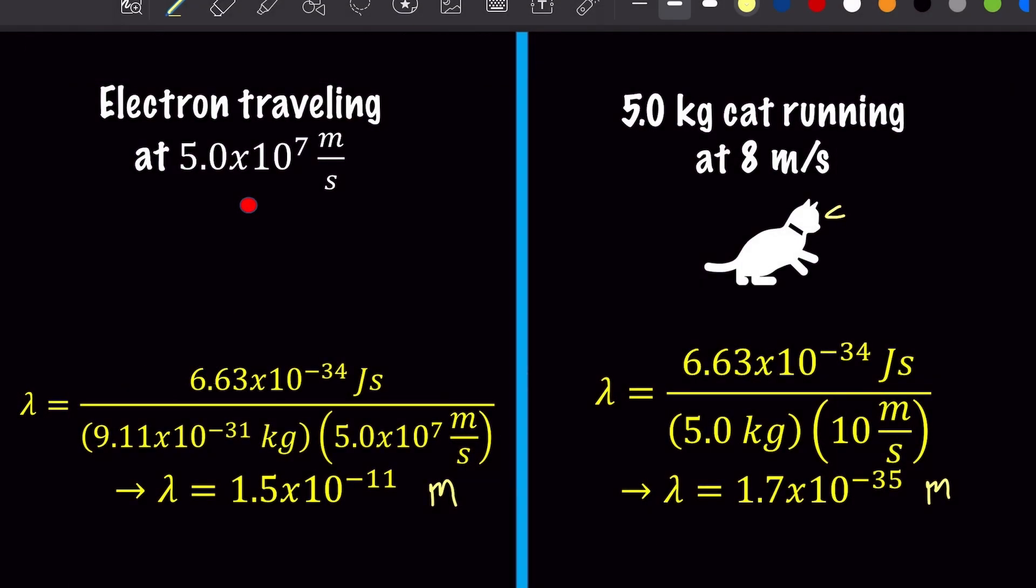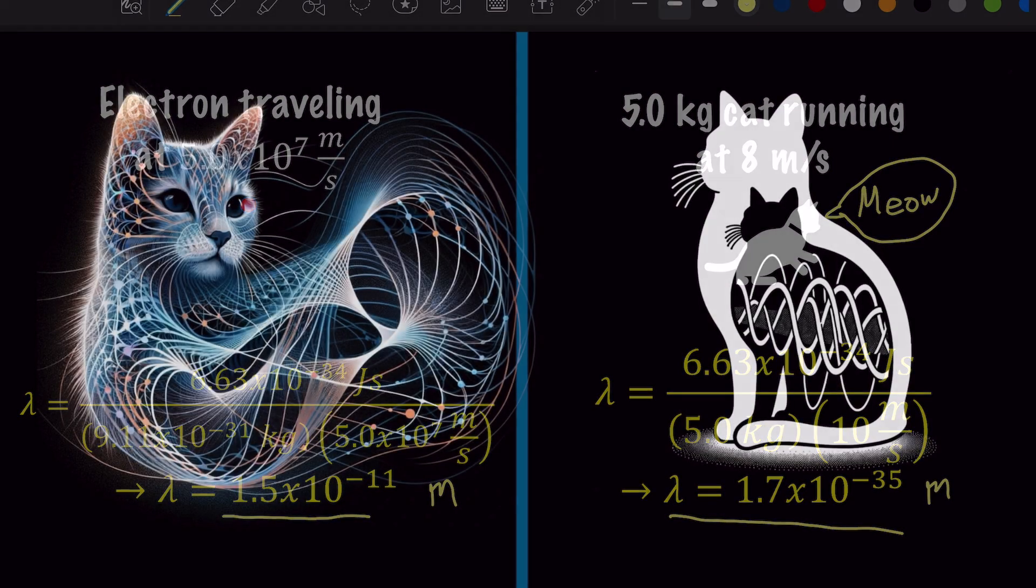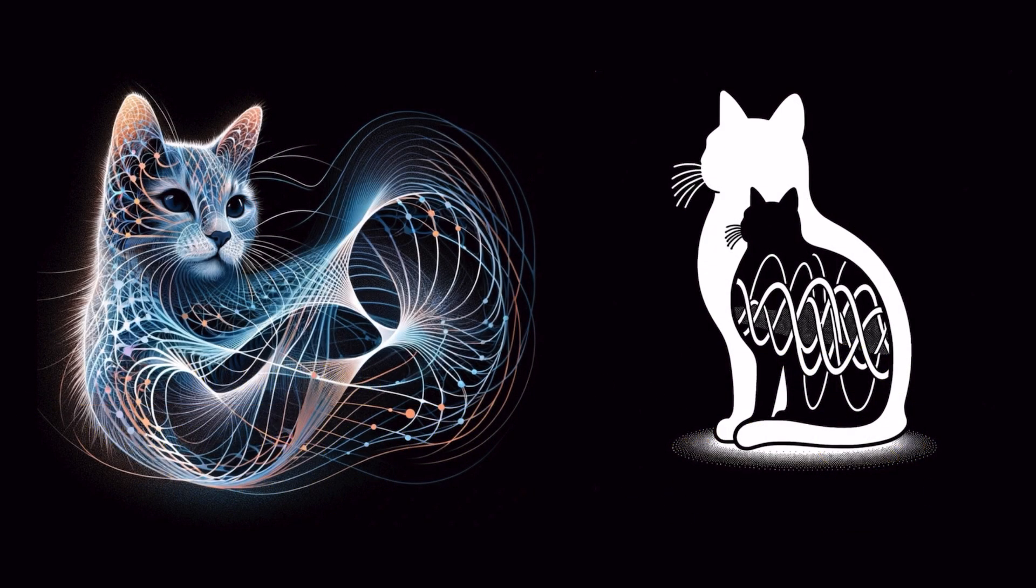For example, this is a comparison of the de Broglie wavelength of an electron and a cat. The electron's de Broglie wavelength, while very small at 1.5 times 10 to the negative 11th, is actually pretty significant compared to the size of an atom, whereas the cat's de Broglie wavelength of 1.7 times 10 to the negative 31st meters is very insignificant compared to the size of the cat. So it's not really reasonable to assume that a cat exhibits wave behavior.